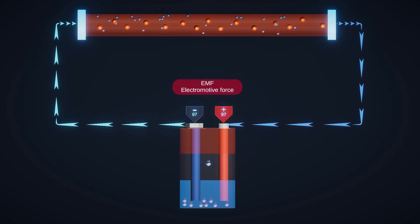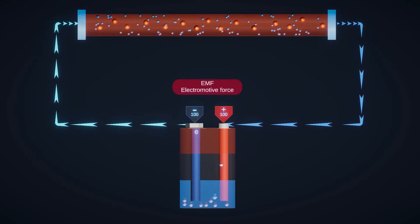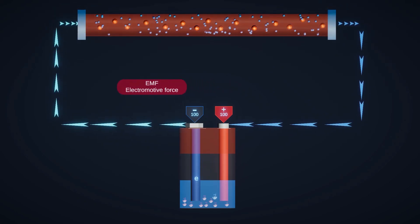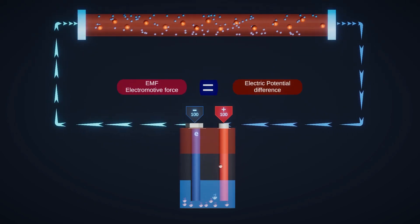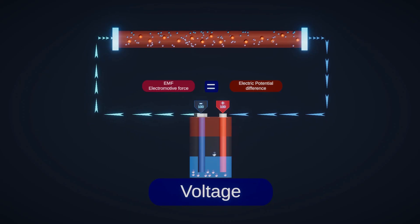When the battery is connected to the circuit, the electromotive force is called the potential difference, which we commonly refer to as voltage.